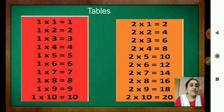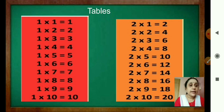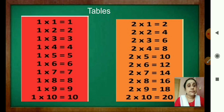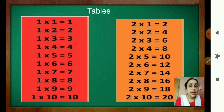Now read the table of 2: 2 one is 2, 2 twos are 4, 2 threes are 6, 2 fours are 8, 2 fives are 10, 2 sixes are 12, 2 sevens are 14, 2 eights are 16, 2 nines are 18, 2 tens are 20. You can write these tables in your notebook. We have done the revision of the tables of 1 and 2.